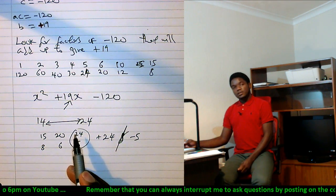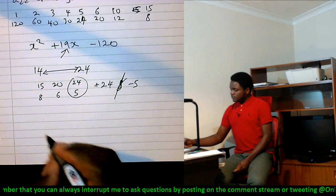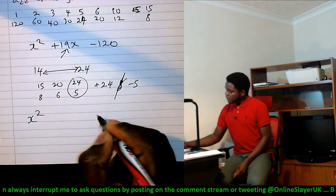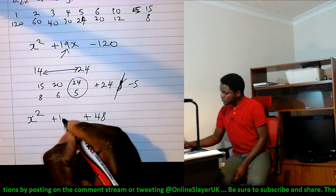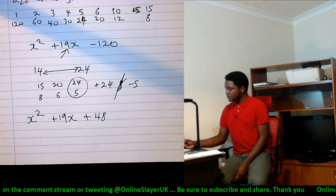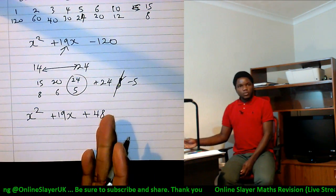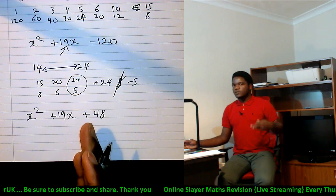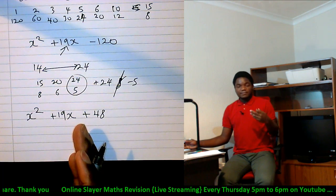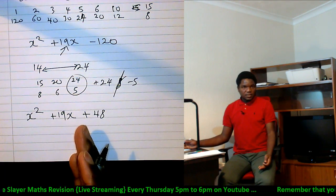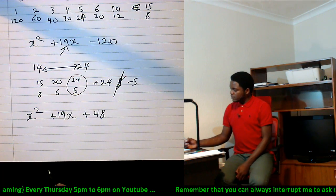Do you want another example? Okay. X squared plus 48, and you've got plus 19x. Again, what are the factors of 48? We've got 1, we've got 2, you've got 3, you've got 4, you've got 6, you've got 12. I mean, there's so many. But you don't need to go all that far.